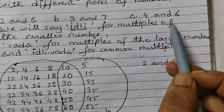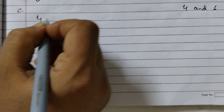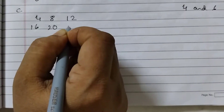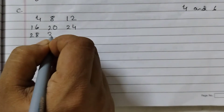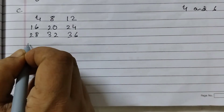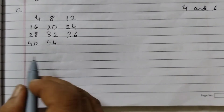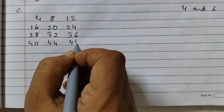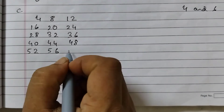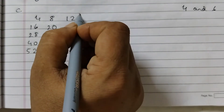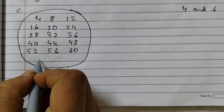The next pair is 4 and 6. We will write the multiples of 4 first: 4, 8, 12, 16, 20, 24, 28 — you can go on adding 4 — 32, 36, 40, 44, 48, 52, 56, 60. We will make a circle here for idli.